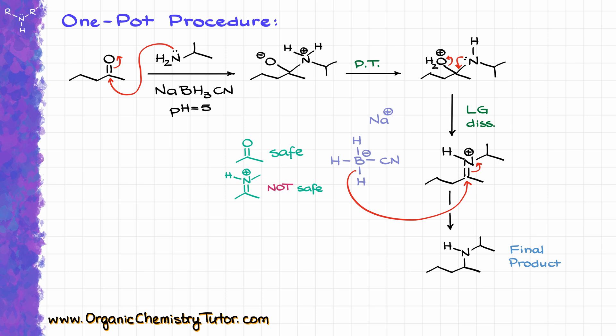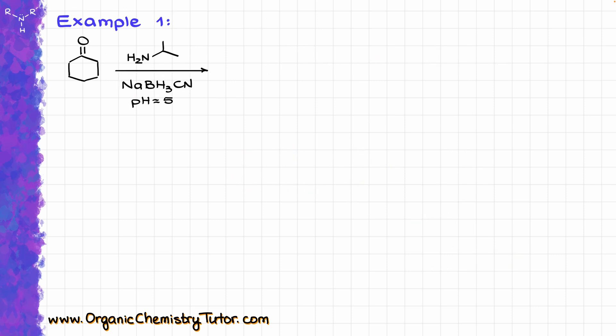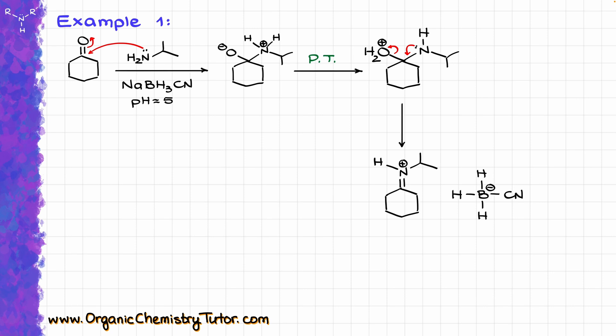So now, armed with the information about the mechanism and how the procedure works, let's look at some examples, starting with this one. So here, I am reacting my cyclic ketone, cyclohexanone, with my isopropyl amine in the presence of sodium cyanoborohydride. So that is going to be my single-pot procedure. So mechanistically speaking, my first step is going to be attack on my carbonyl over here, giving me the following charged intermediate. Then I'm going to combine all of my proton transfer steps and get straight to the point where I can do the leaving group dissociation. So I'm going to kick my leaving group out, making my iminium intermediate. And then, as soon as I have that, my sodium cyanoborohydride is going to come in, reduce that, and give me my final product looking like this. Pretty easy, right?